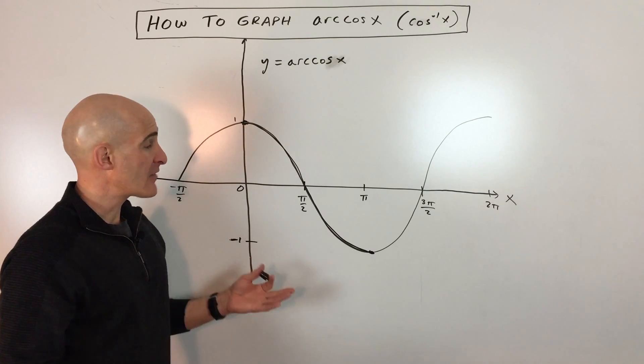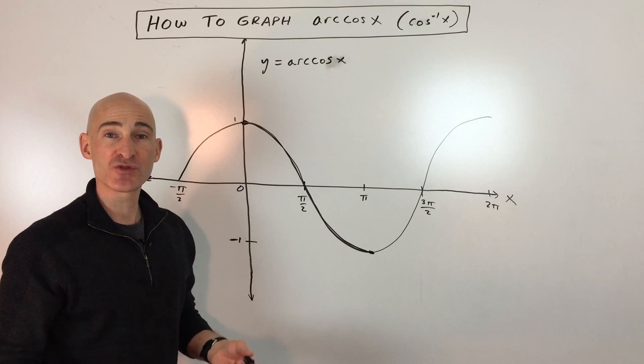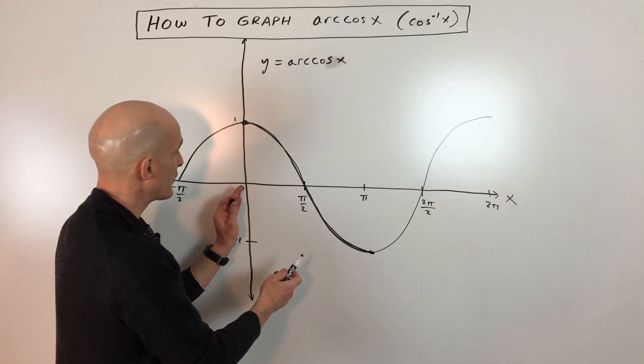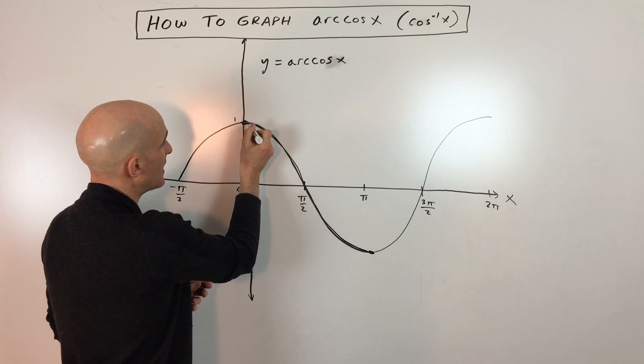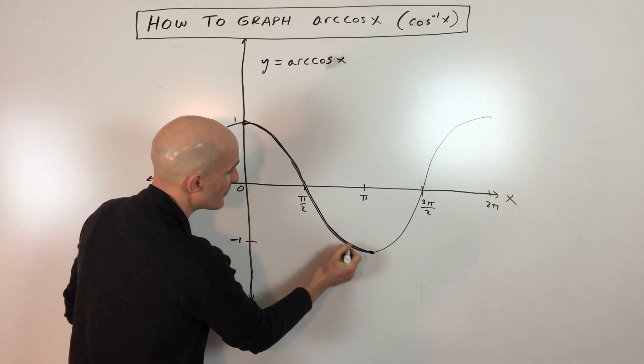So what mathematicians decided to do is to restrict the domain. Just look at a piece of this cosine graph, and they're just looking at the part from zero to pi. So what I did here is I darkened this portion here so that we can see a little bit better.